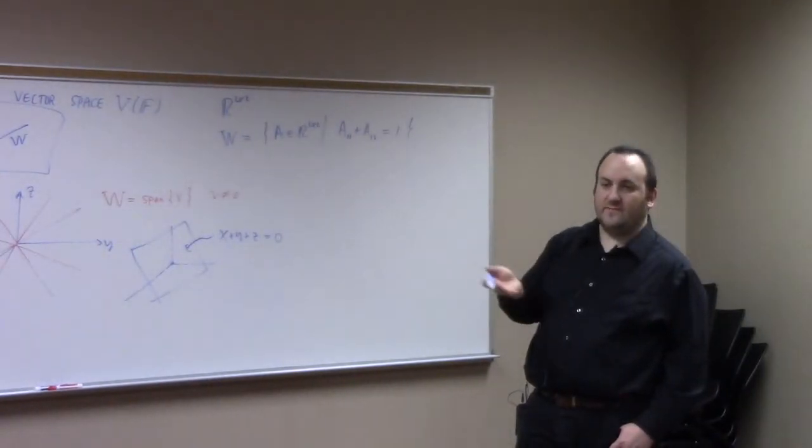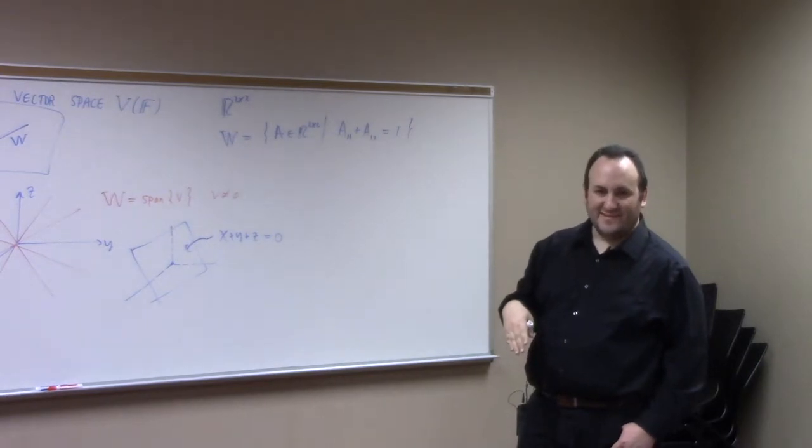We can disprove that this is a subspace of the vector space R2 by 2 very simply, right? It's a subset. Fine. Number one always works, almost always. But number two, we get into trouble if we look for zero.